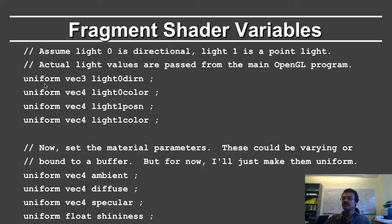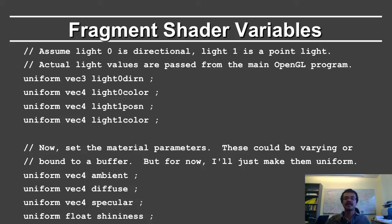This is a uniform — because it's the same across all fragments — vec3, light 0 direction. Light color is a 4-vector RGBA. Light 1 position is a 4-vector because it's a positional light, in homogeneous coordinates. Light 1 color is again the color. Now set the material parameters. These could vary on a per-vertex or per-fragment basis, but we'll just make them uniform. So ambient, diffuse, specular are vec4s because they're colors, and shininess is just a floating point single value.